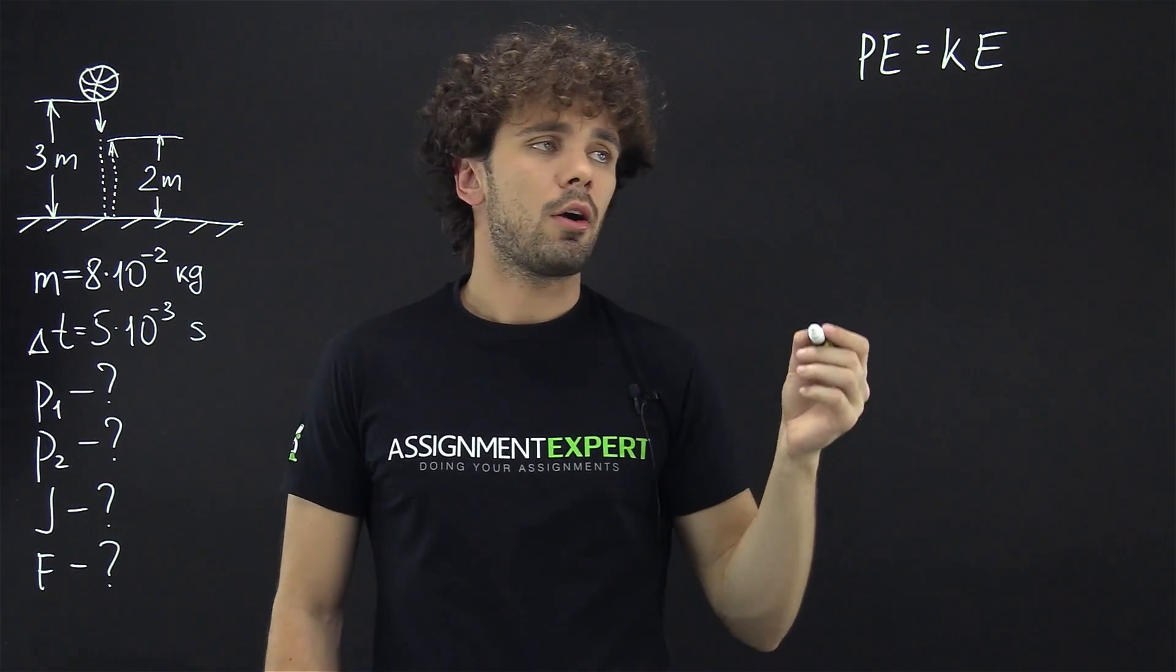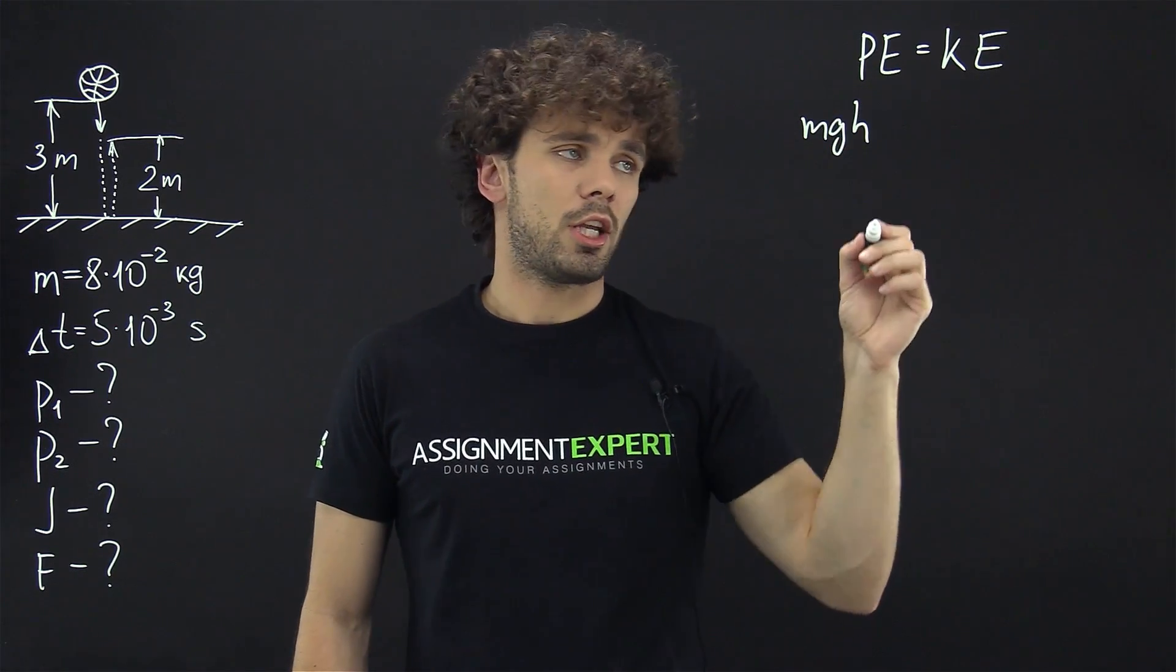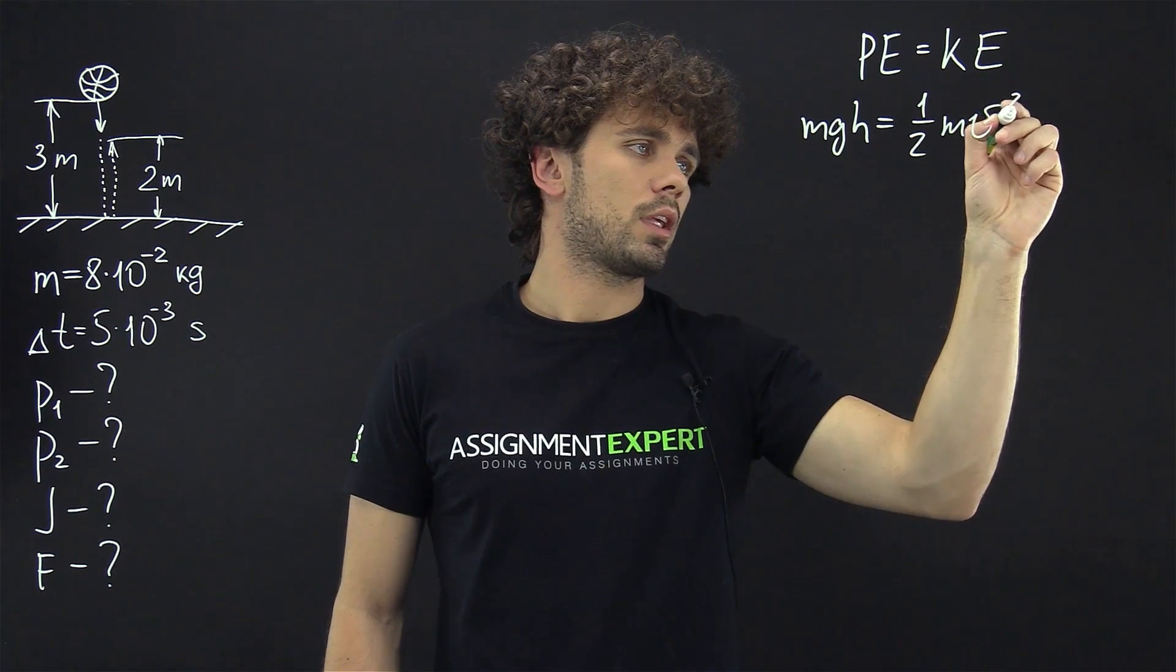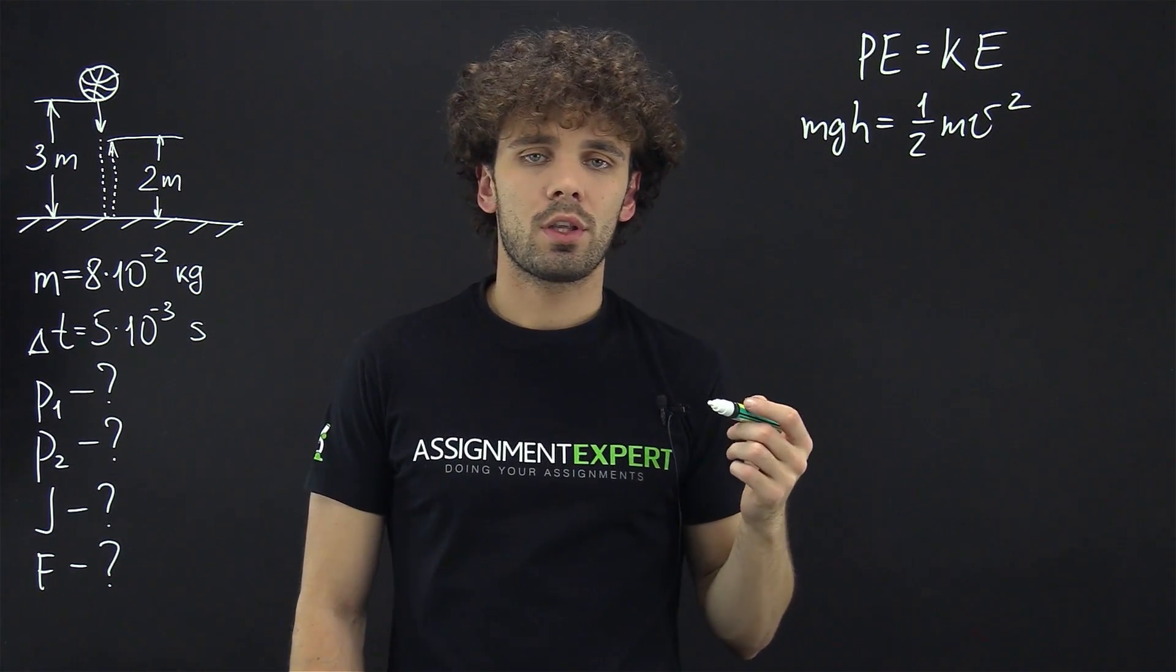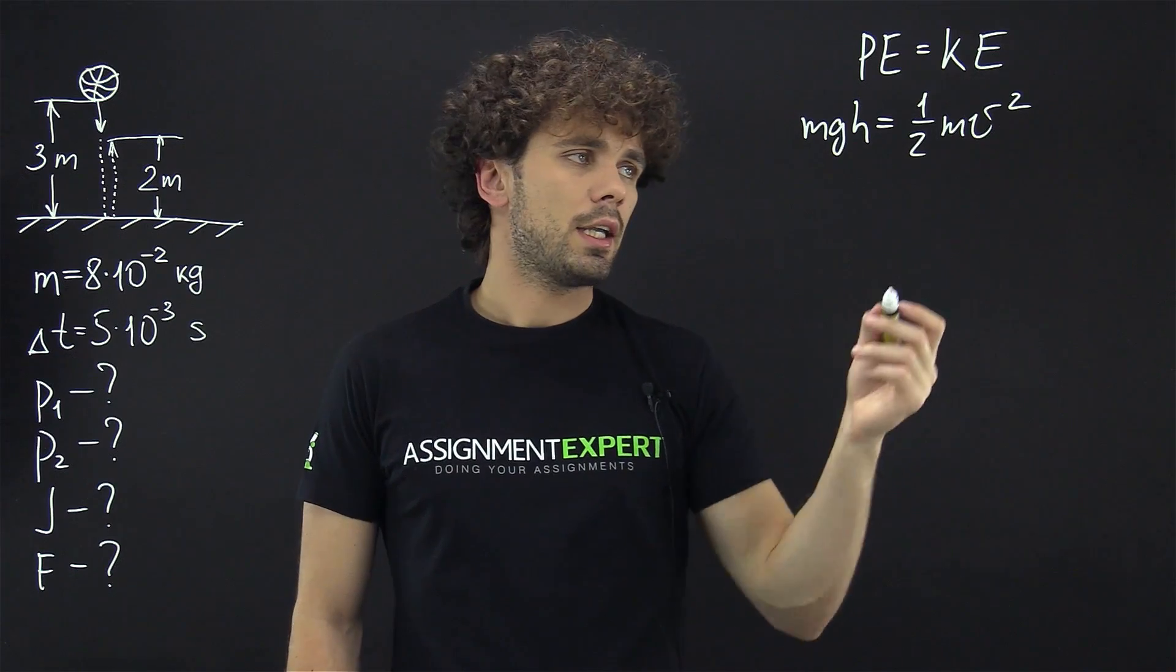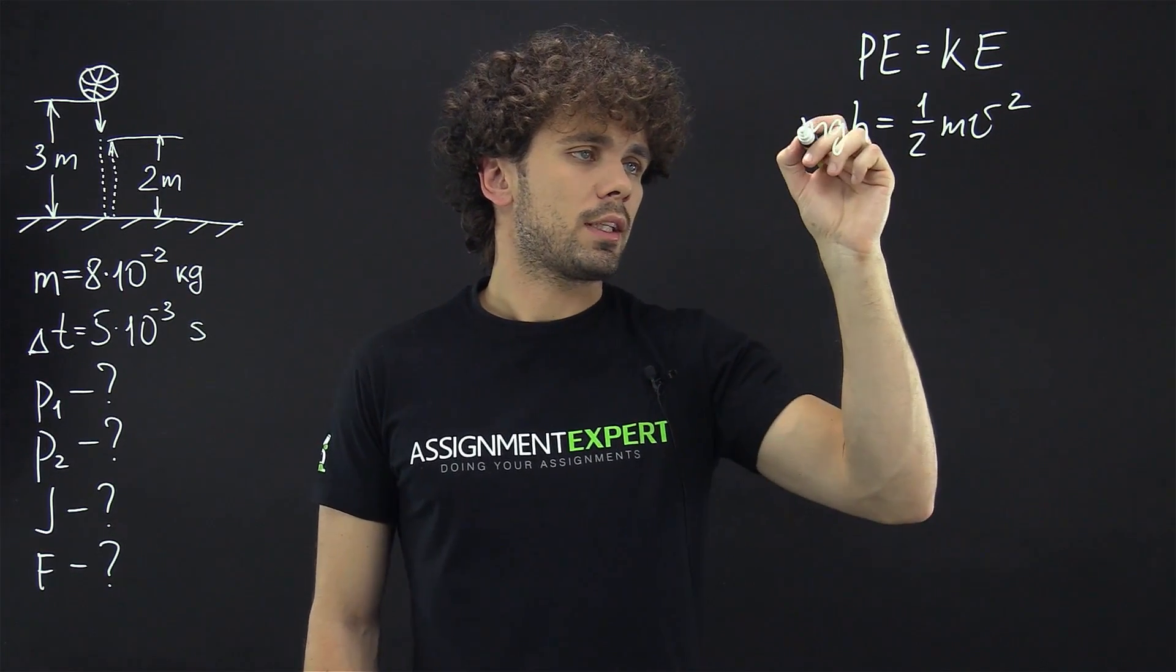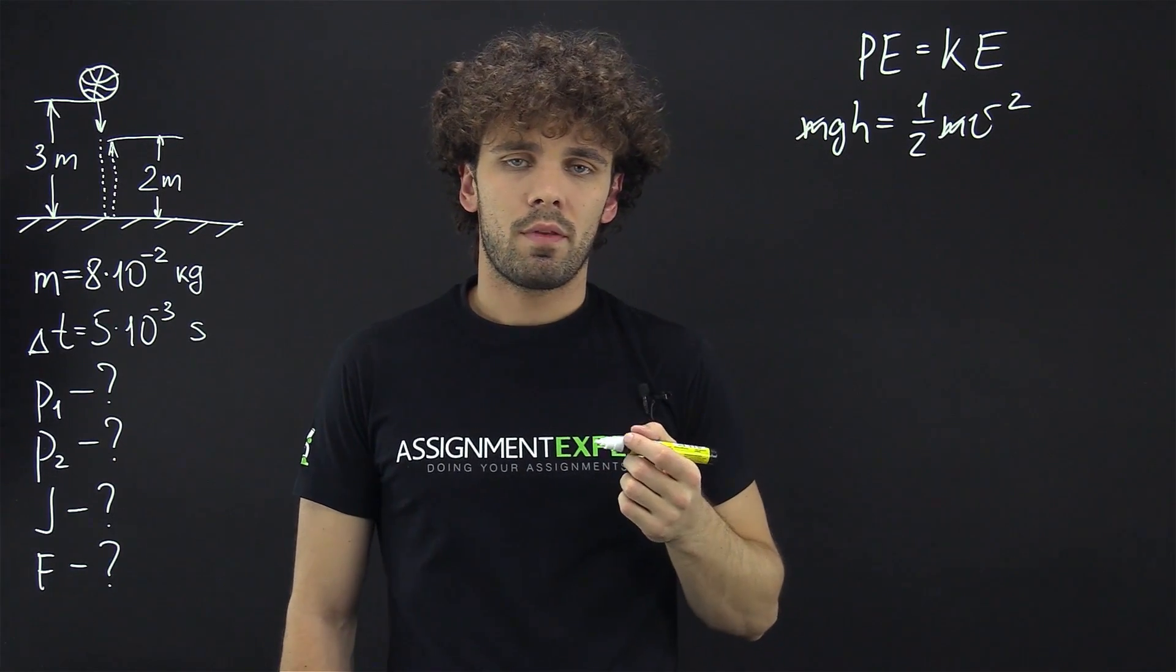And this is in our case the following: mgh is the potential energy equals one half times mv squared, the kinetic energy. Here m is the mass of the ball, g is the free fall acceleration, h is the height and v is the velocity of the ball. Now in this formula we can cancel out m and we can derive v, velocity of the ball.